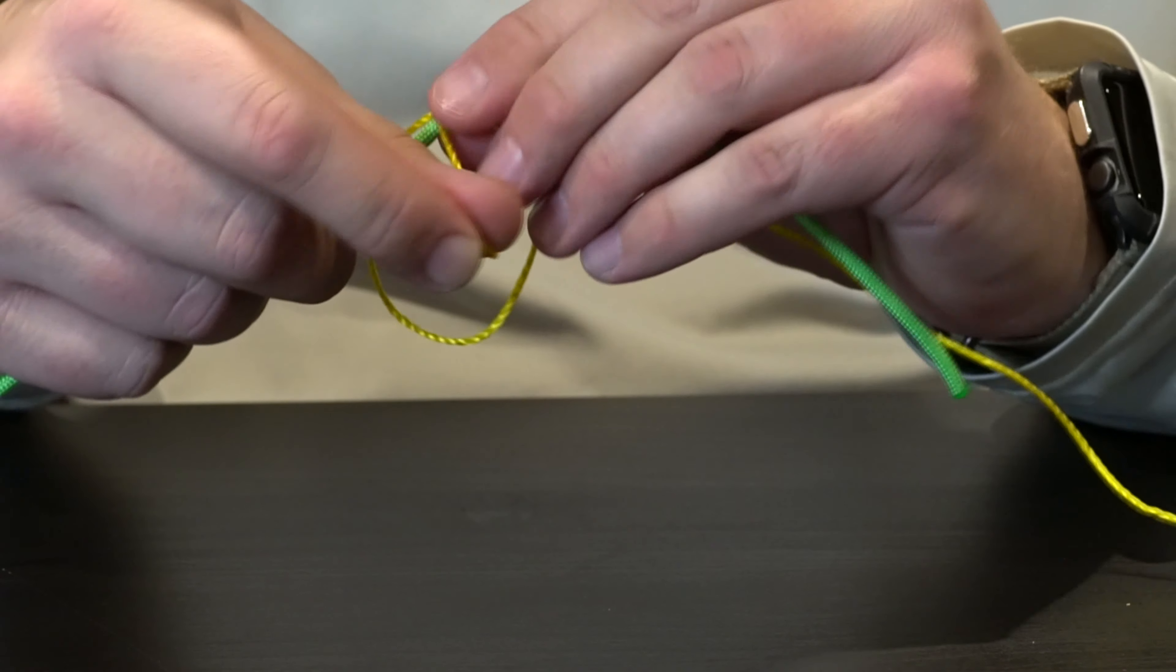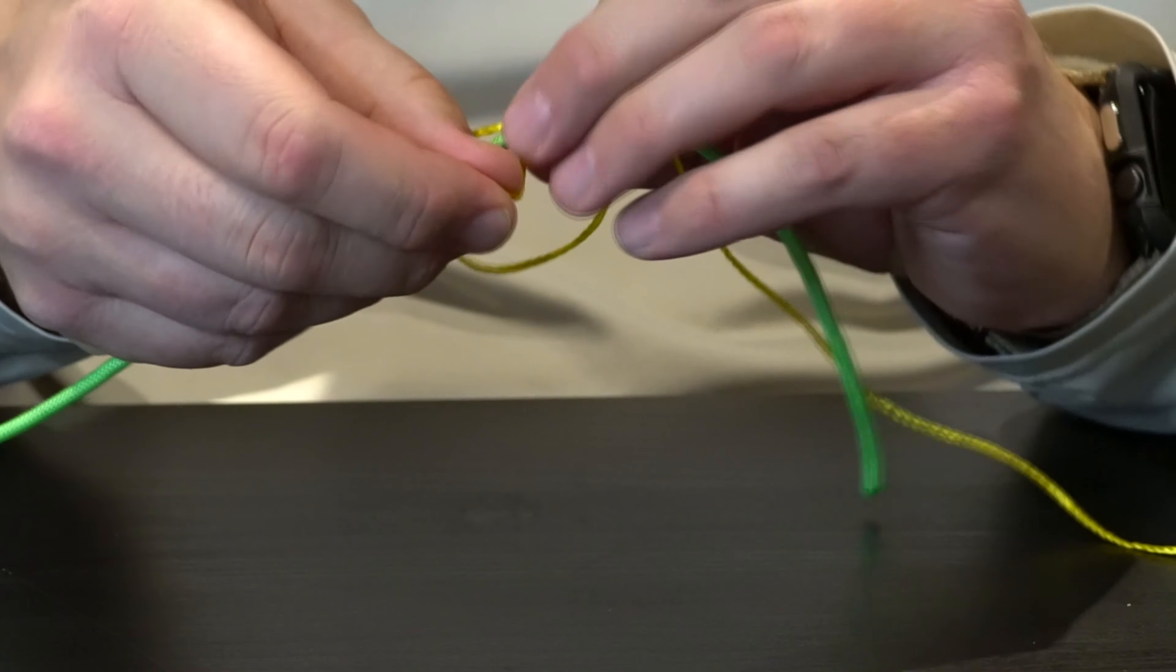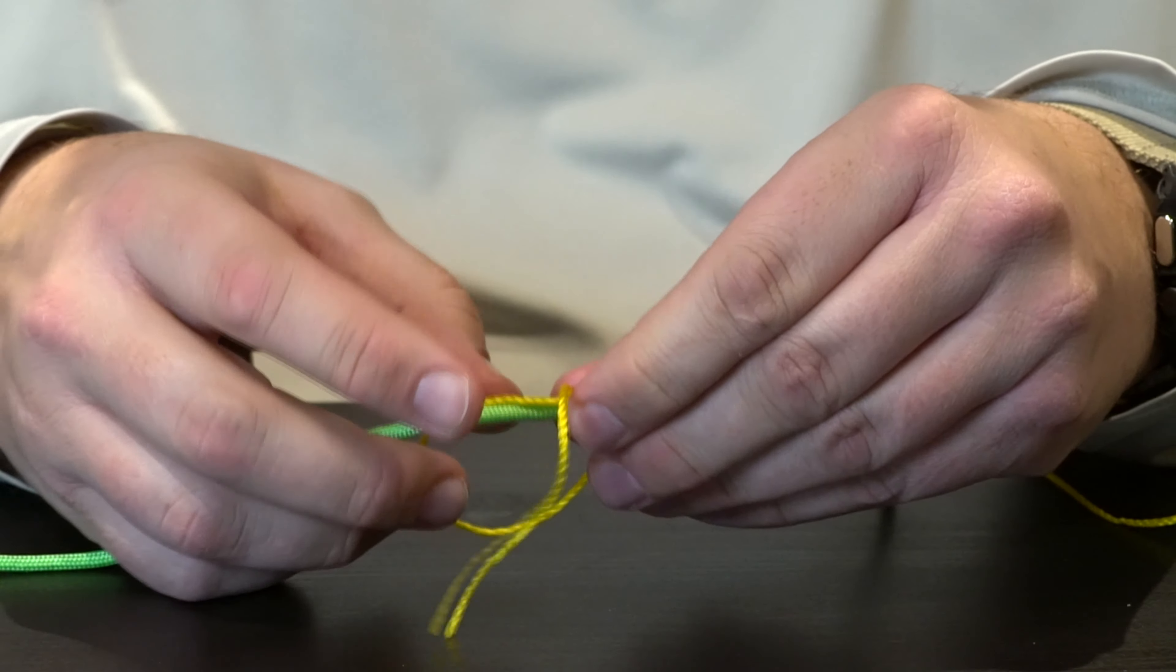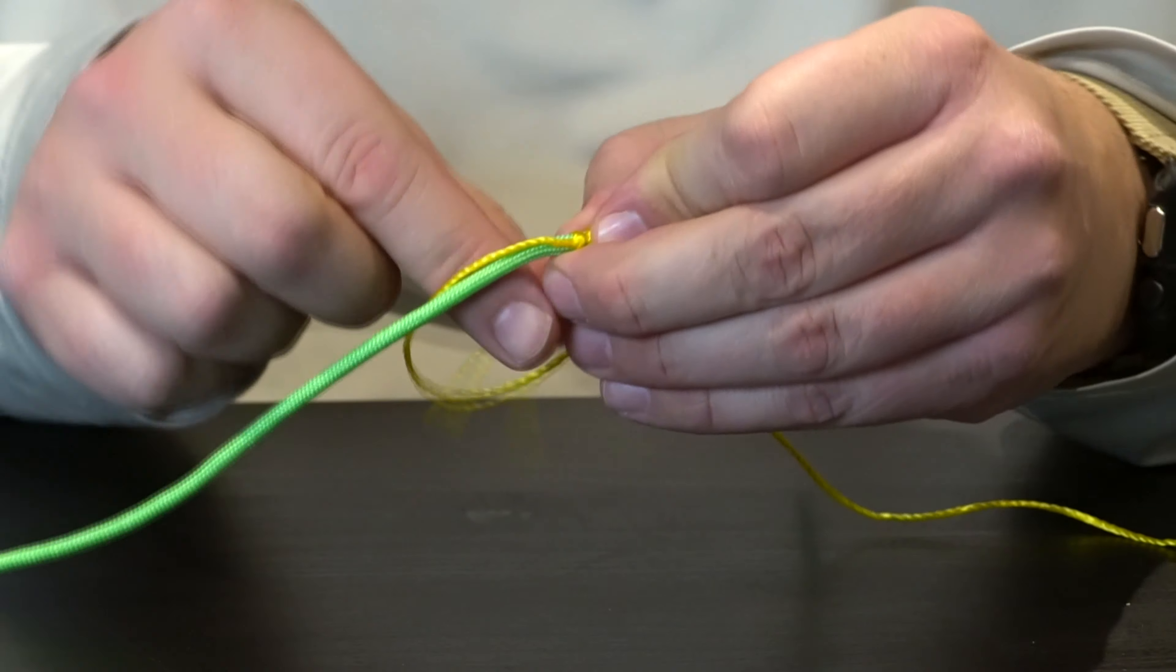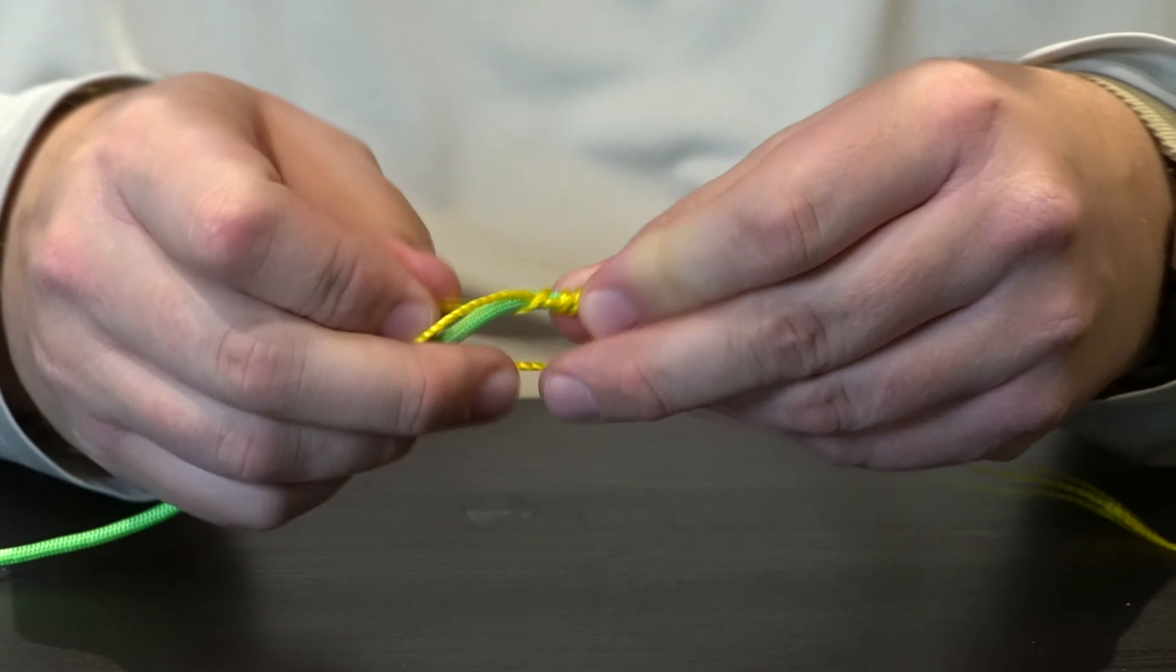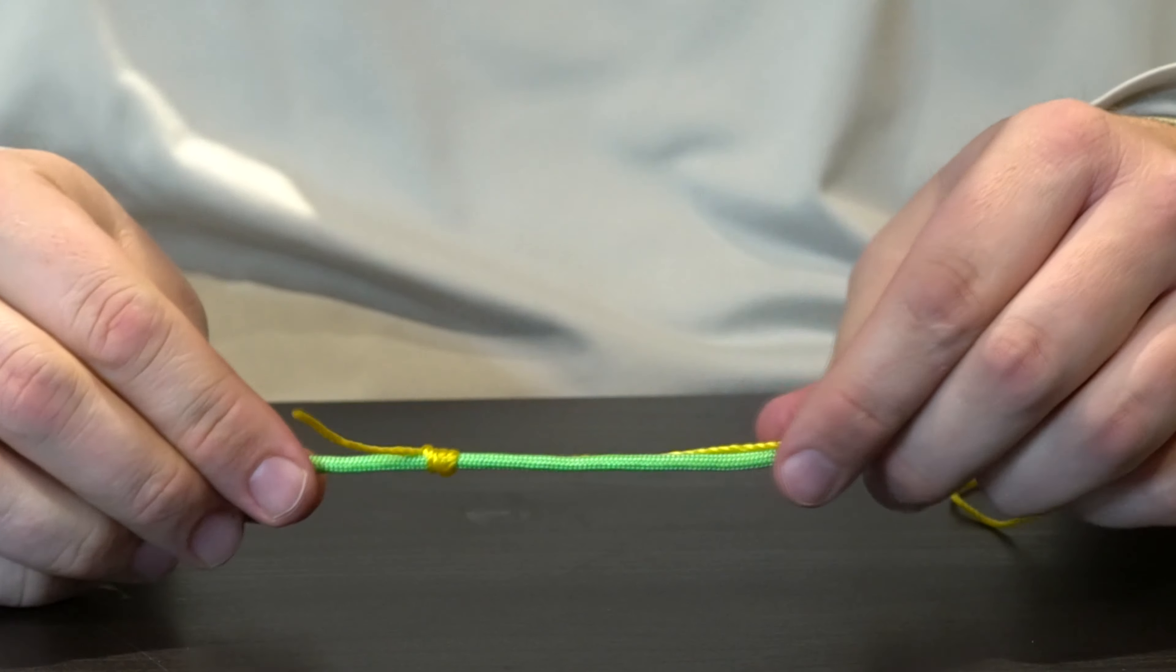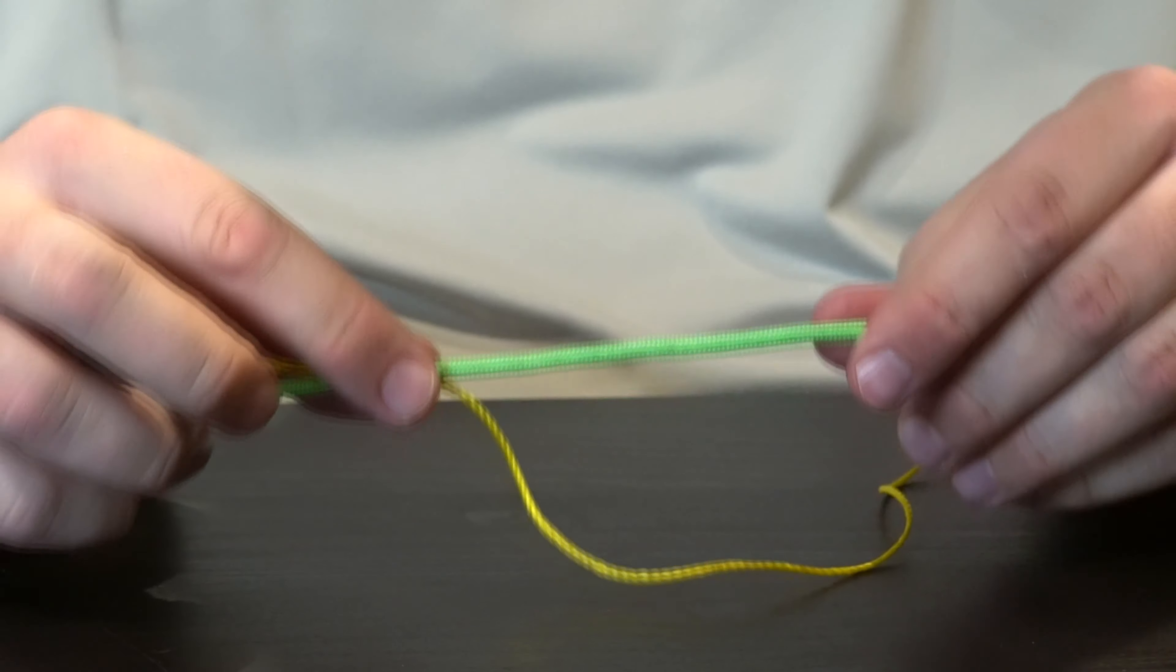From here, I'm going to take this and pass the tag in through the loop with the smaller line four or five times, then I'll pull this tight. What that does is it wraps around the thicker line so the knot is tied on itself.